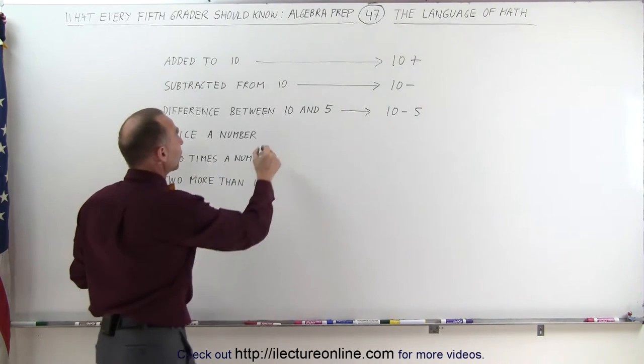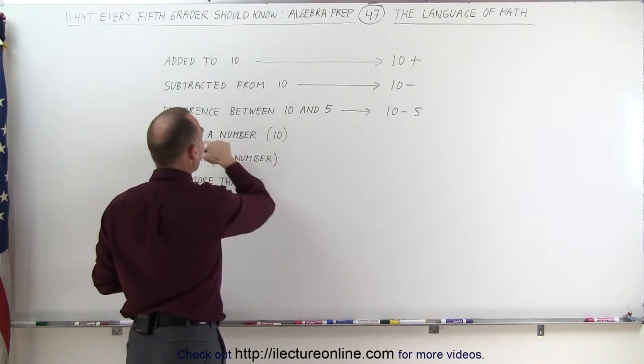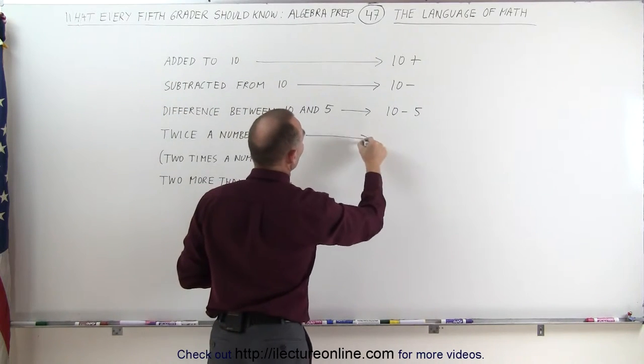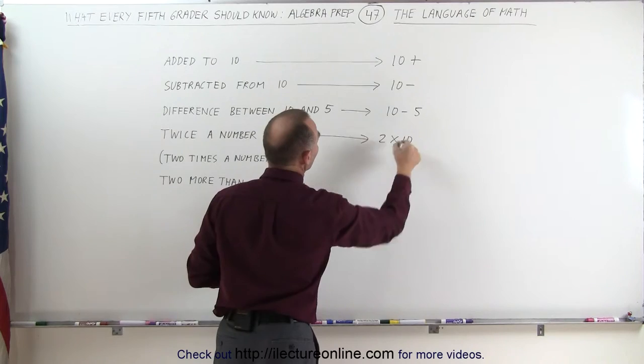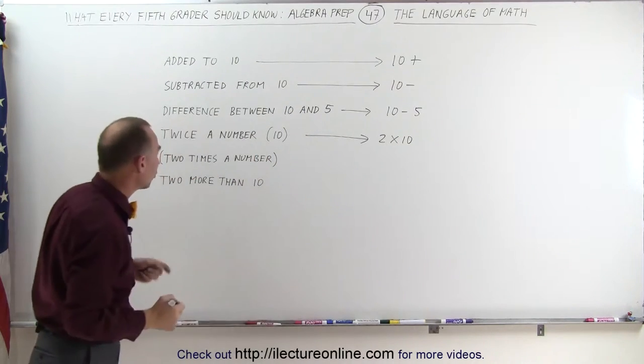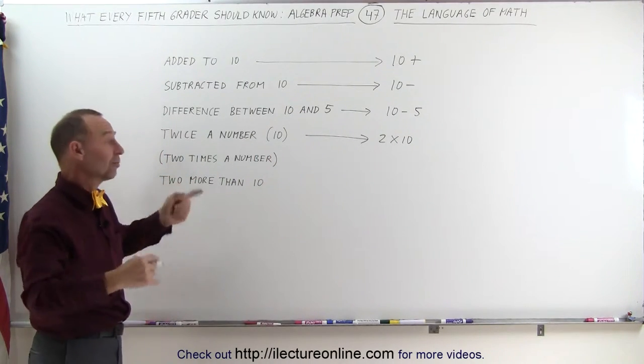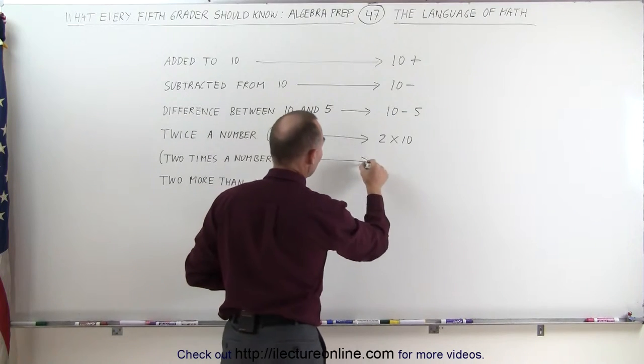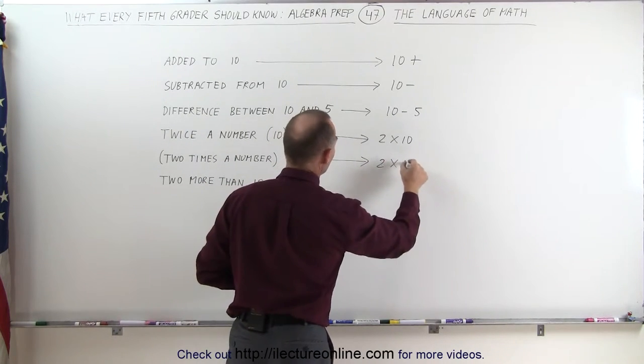Twice a number, let's say we have the number 10. Twice the number means two times that number. Or sometimes we write out two times the number, and then you would write exactly the same thing, two times that number.